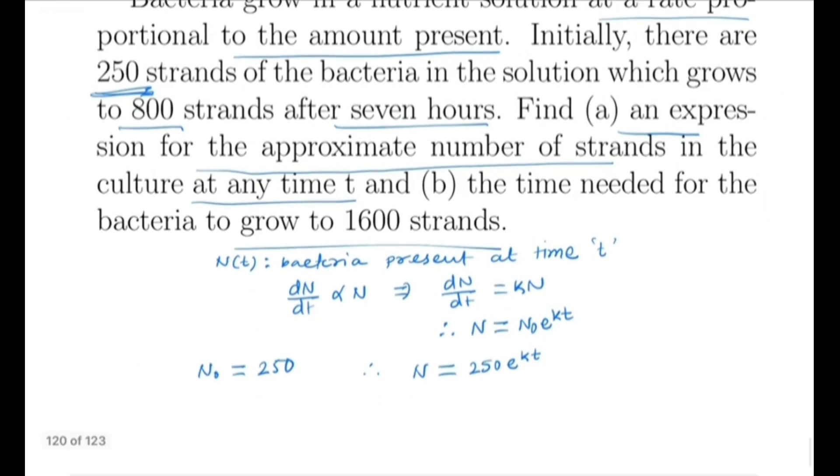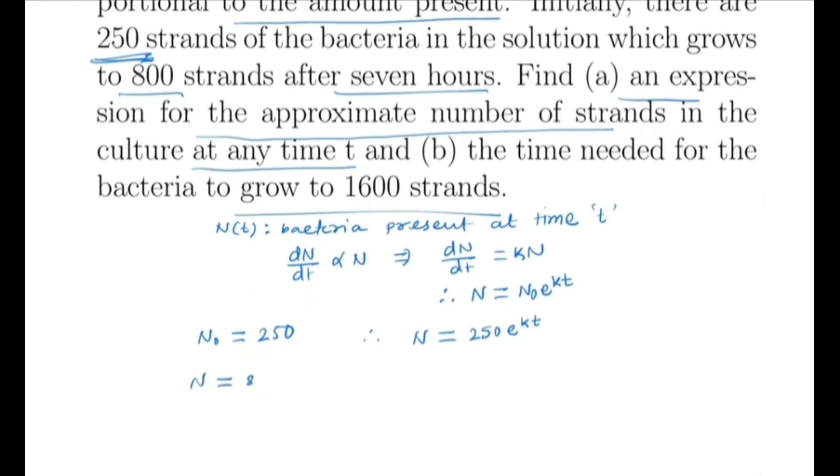We have to find k. It is known that N equals 800 when t equals 7. So we have 800 equals 250 e^(7k). Therefore e^(7k) equals 800 by 250, so 7k is ln(800/250). Thus k is 1/7 ln(800/250). If we calculate this by a calculator, we get k equals 0.166. So this is the first one.